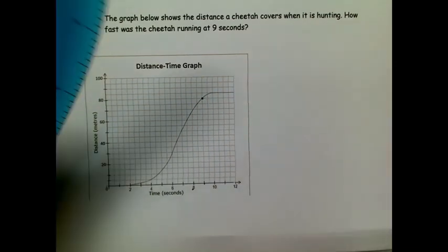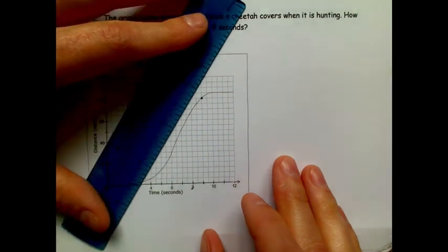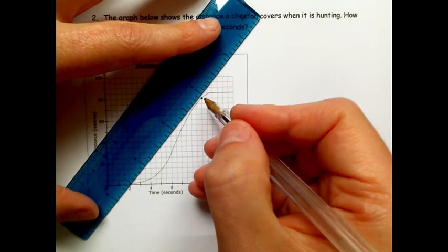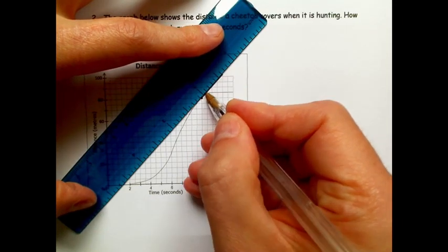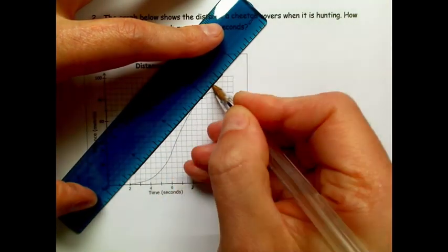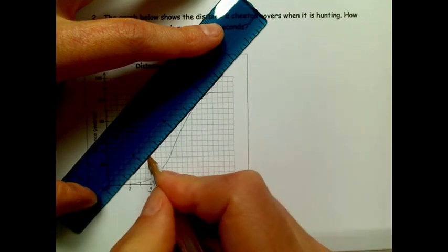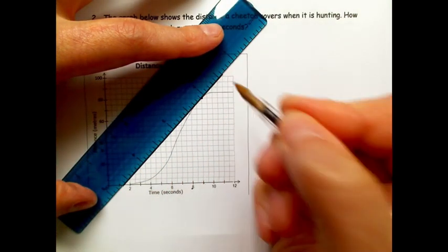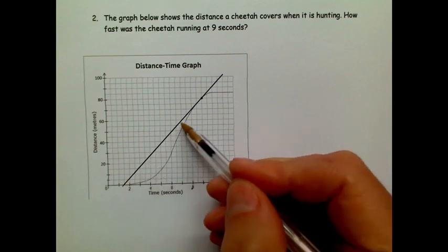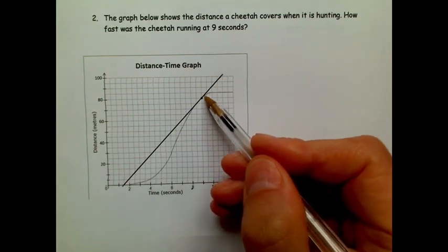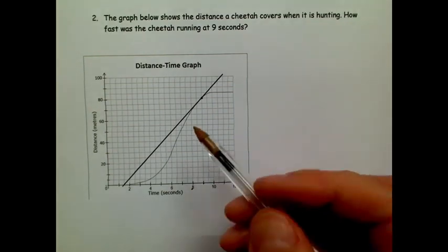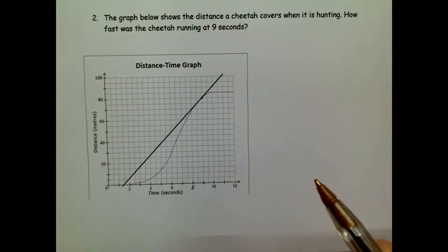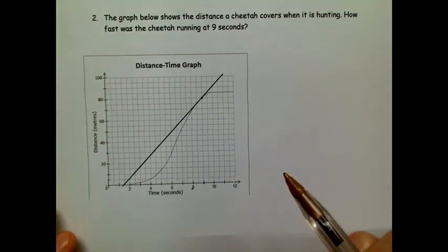So in order to work out the gradient if it's curved, I need to draw a tangent. So I take my ruler and I'm going to position it so that it is just touching that point, and then I draw a straight line. It doesn't matter how long I draw the line because I just want to work out the gradient along that line, and the longer I draw it, in fact, it's going to make my life a bit easier.